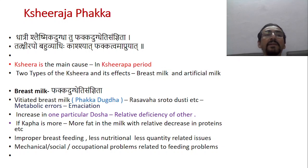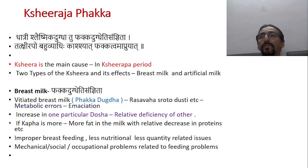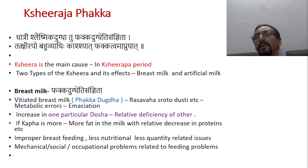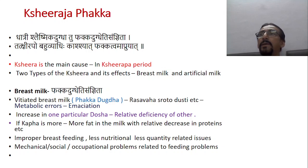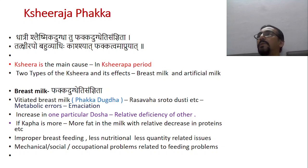Majorly they mention that Dhatris' sleshmika dugdha — meaning kapha-vitiated milk — if the breast milk is affected by kapha dosha in a feeding mother, it is also called fakka dugdha.